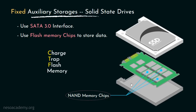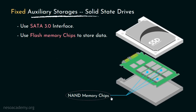Nowadays, we have triple level cells. The presence of electrons in a cell can mean any value from binary 000 to 111. In simpler terms, now every SSD memory cell can store at least 3 bits. Additionally, the memory cells are stacked vertically over one another and they are made up of NAND flash memories. This is why the technology is also termed as VNAND.